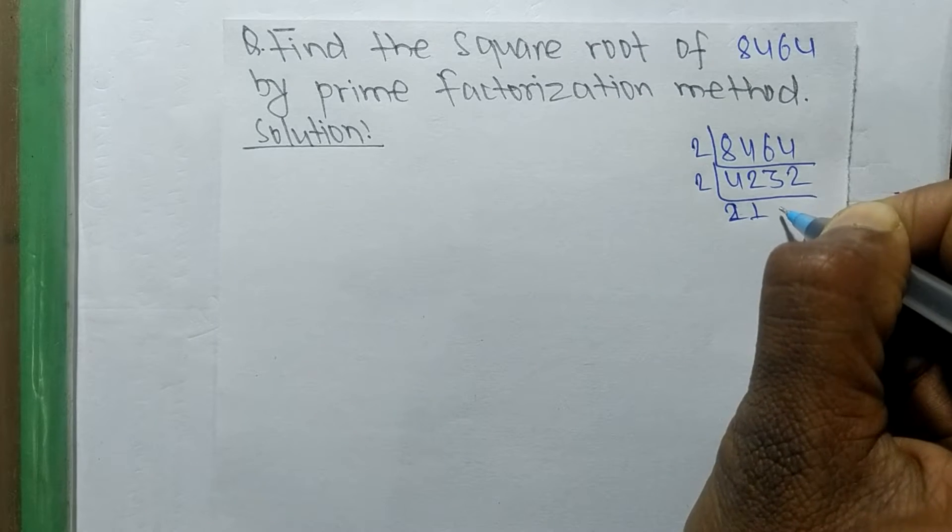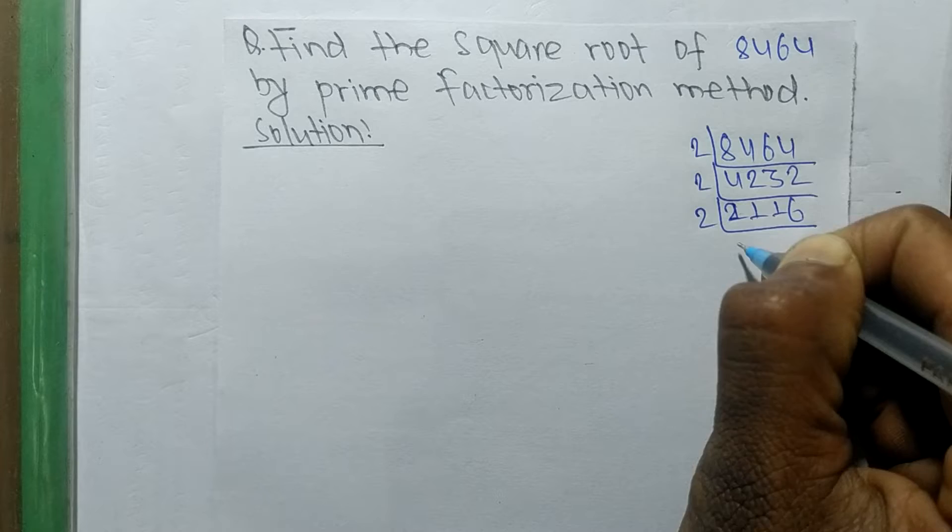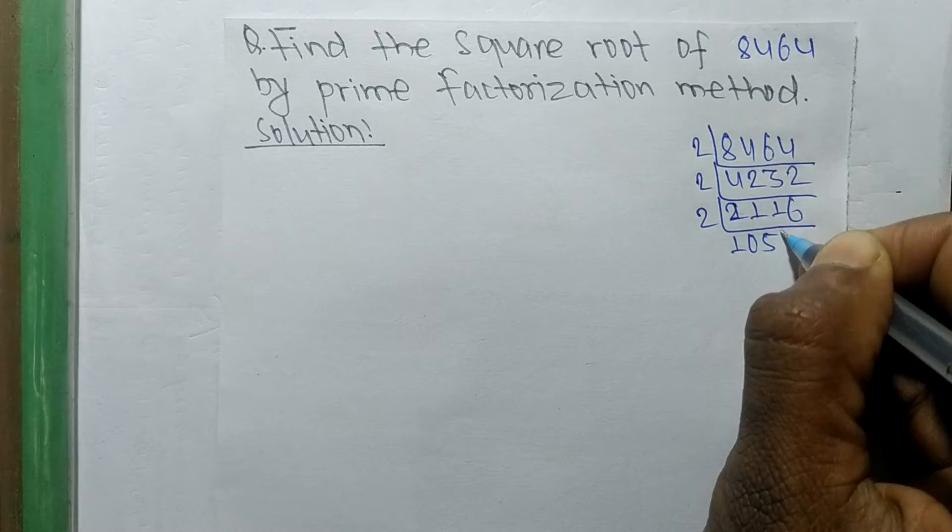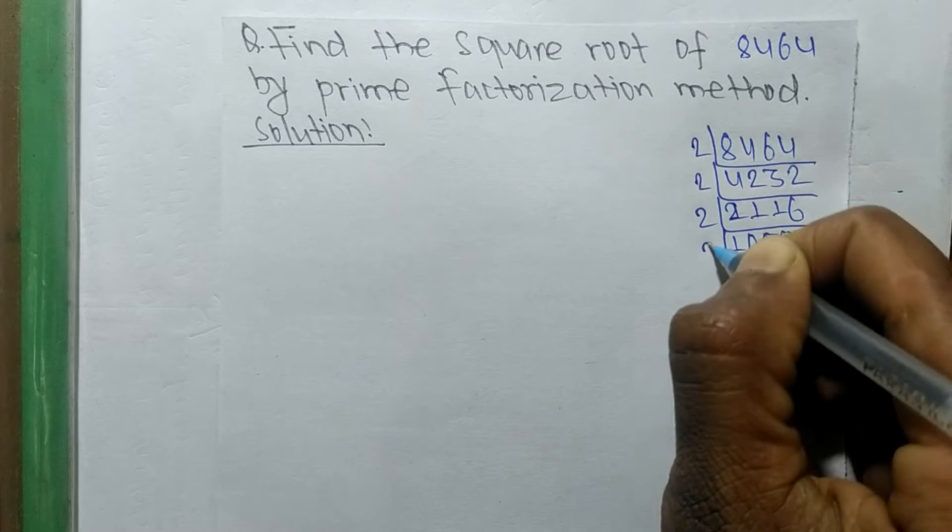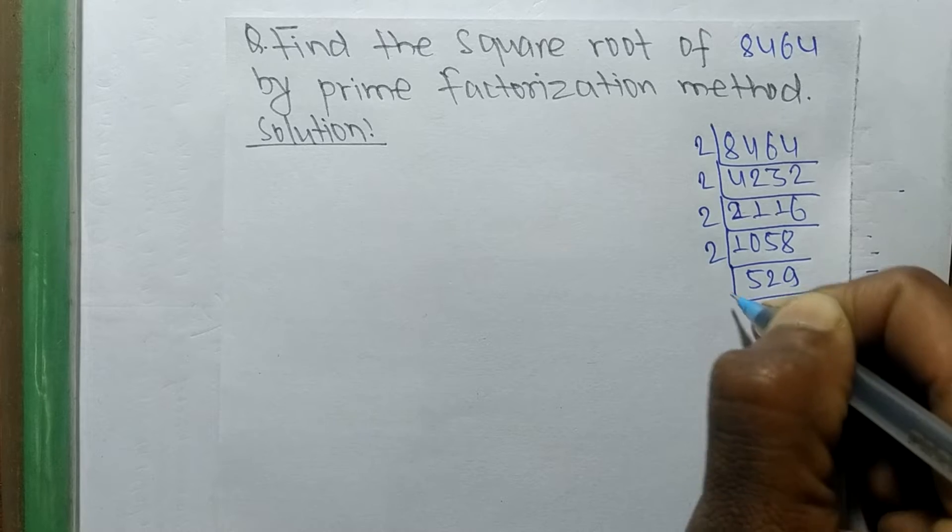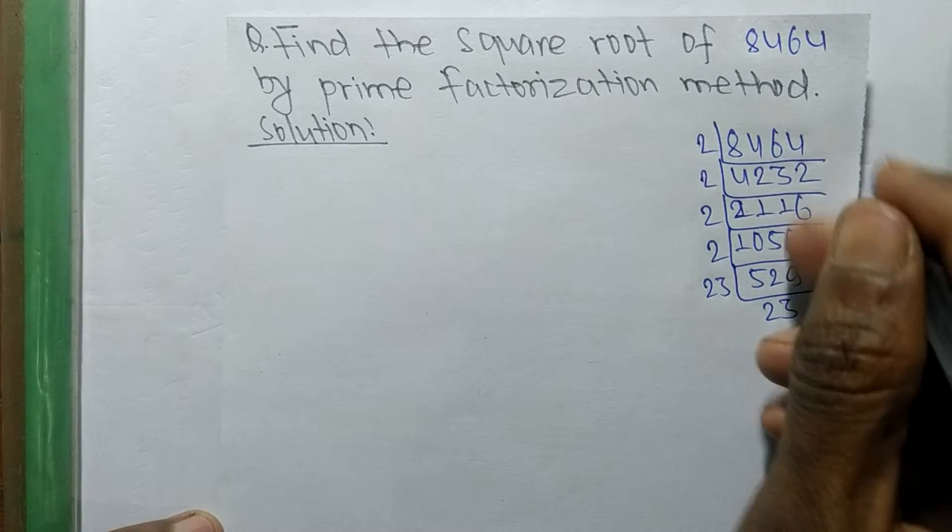Continuing the factorization: 2 times 264.5... Actually, 529 is 23 times 23. So from all these prime factors, we have 2, 2, 2, 2, 23, and 23.